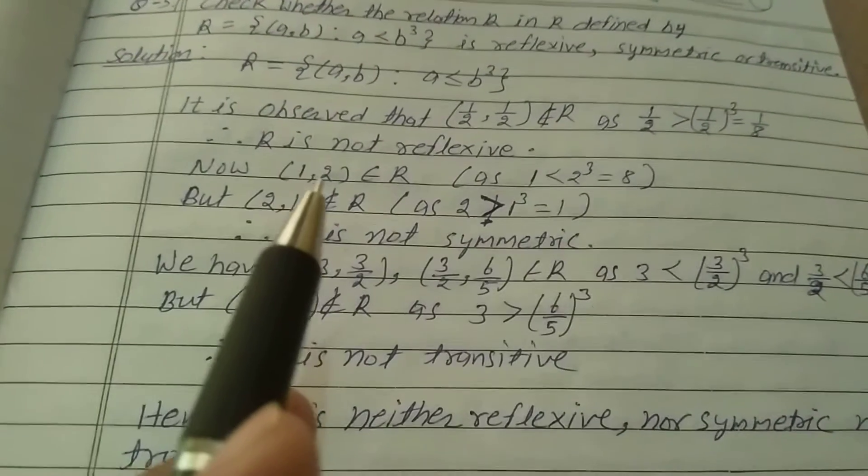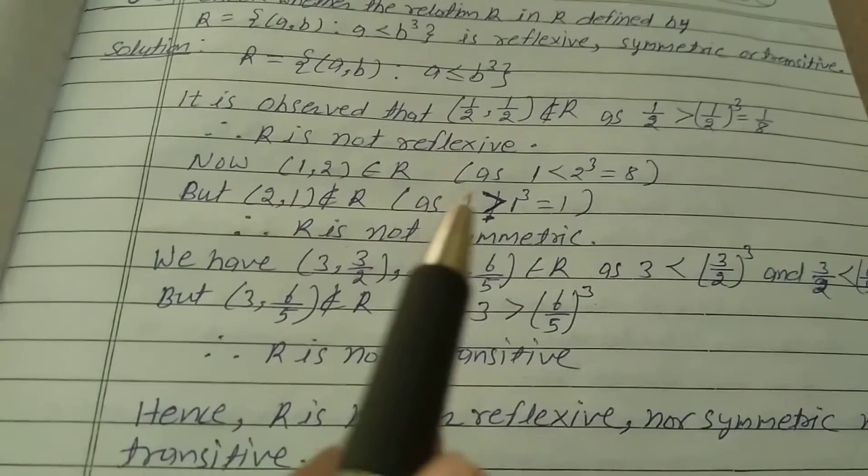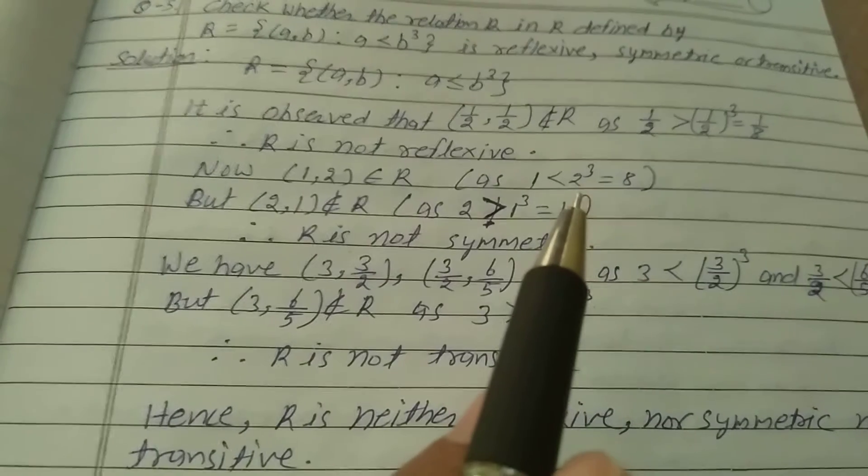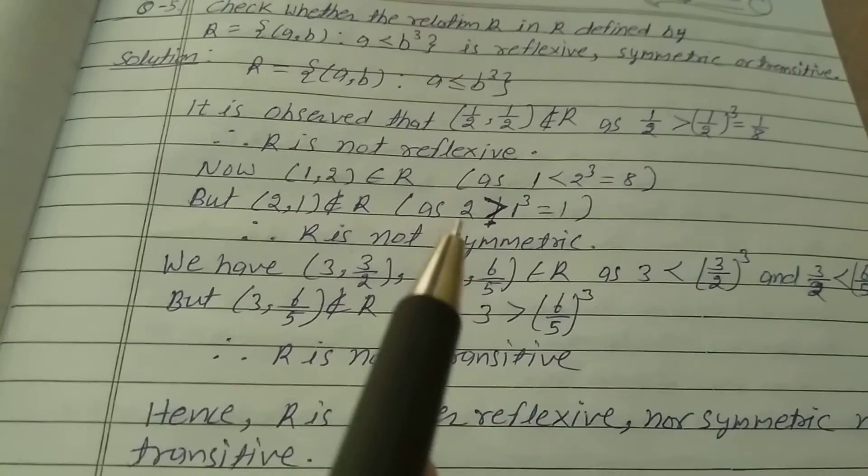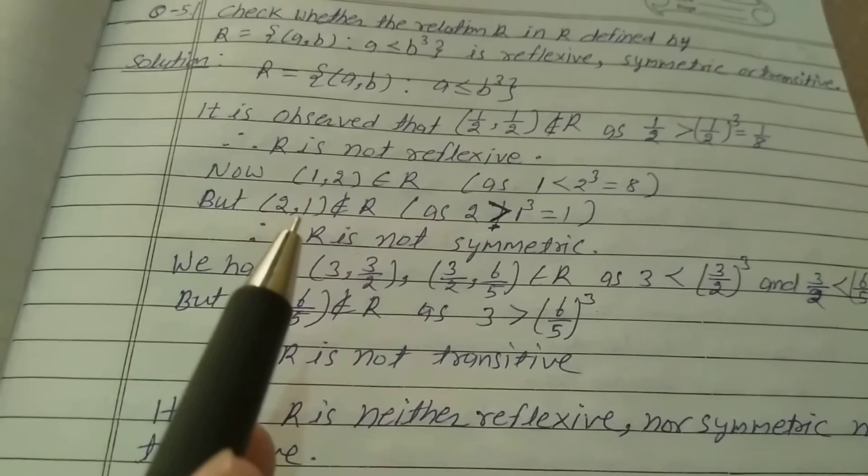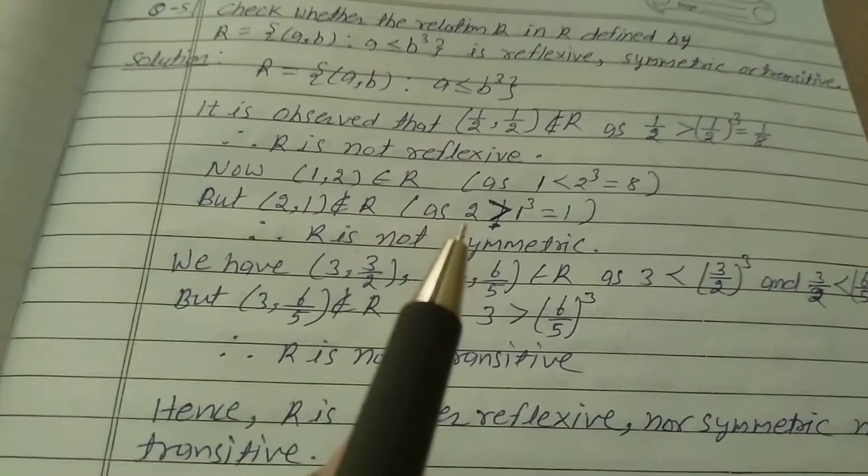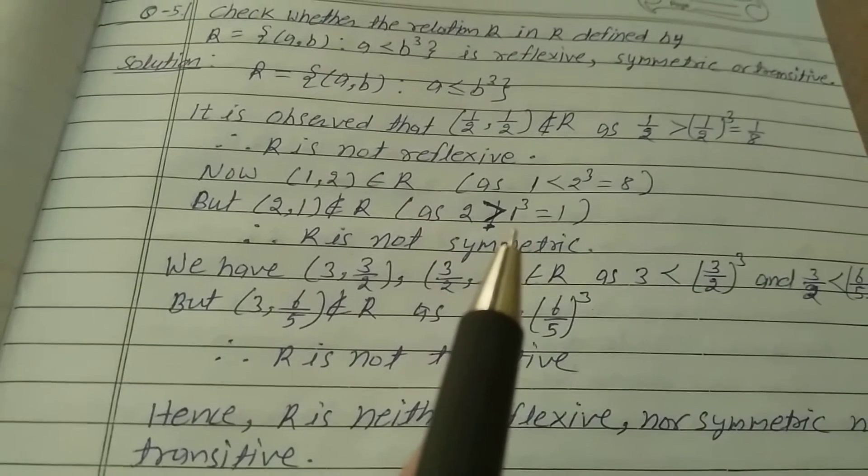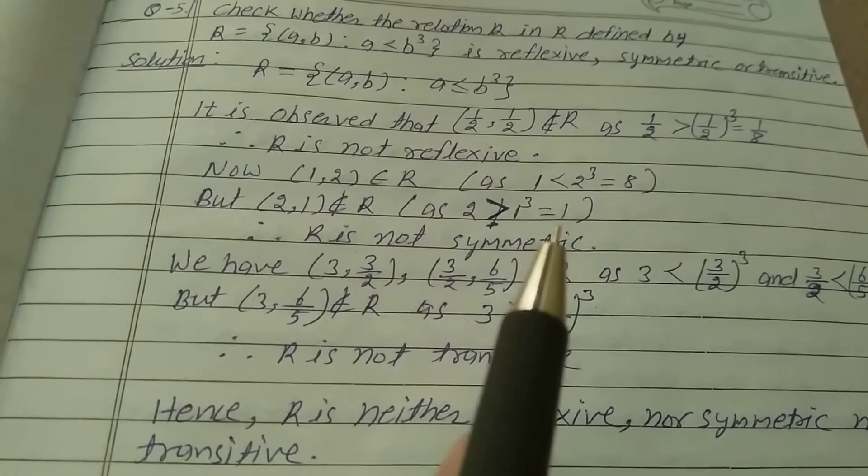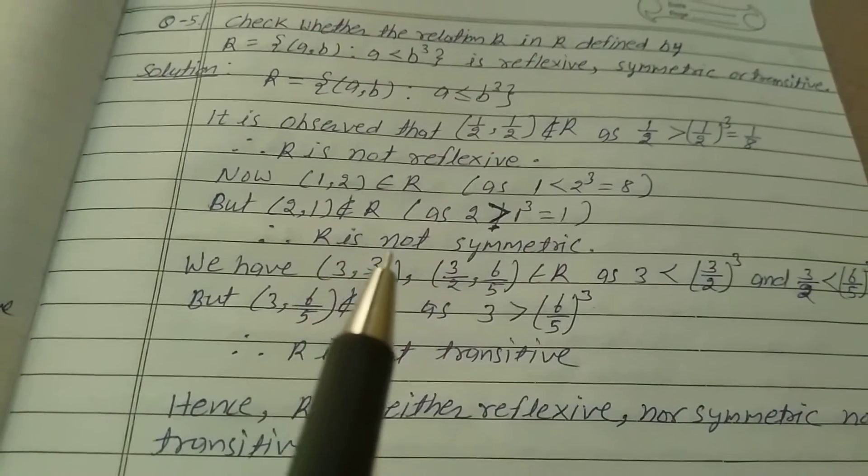Now, (1, 2) belongs to R as 1 is less than 2 cube equals 8. But (2, 1) does not belong to R as 2 is greater than 1 cube equals 1. Therefore, R is not symmetric.